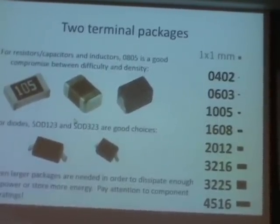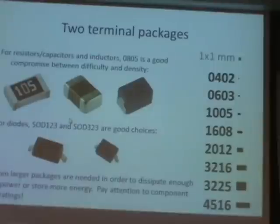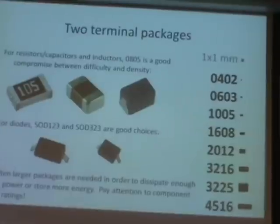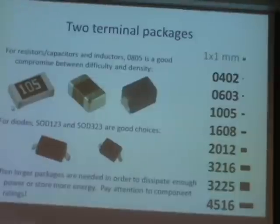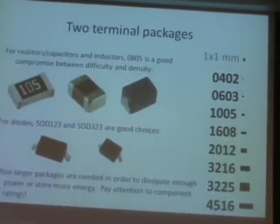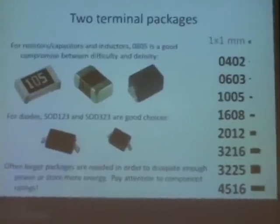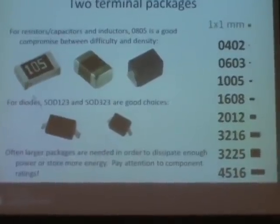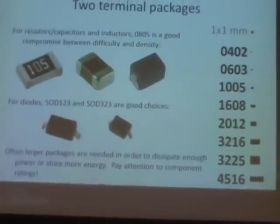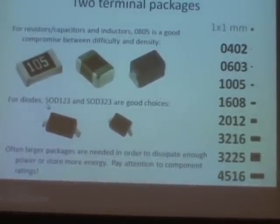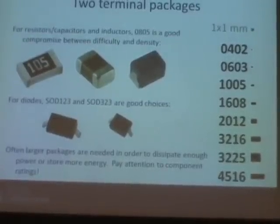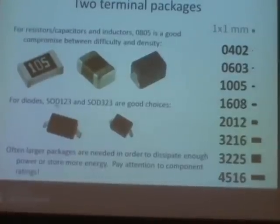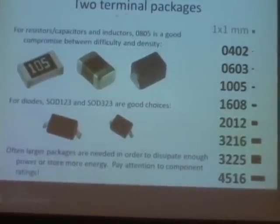For basic two-terminal components — resistors, capacitors, and inductors — I like the 0805 size. The naming convention breaks into two pairs of digits: 0805 means 0.08 inches by 0.05 inches. It's small but fairly easy to work with, and big enough that you can read the numbers on them. 0603 components have codes on them requiring a microscope to read. I'd say 0805 is the sweet spot unless you need higher power dissipation or higher energy storage. For diodes, the D123 and D323 packages are nice for general-purpose small-signal applications.